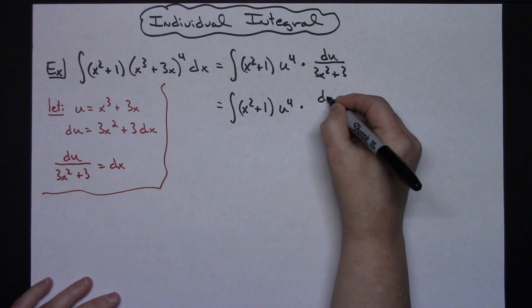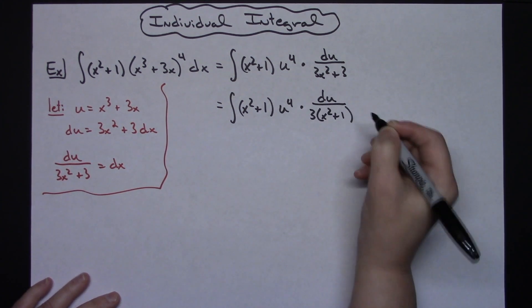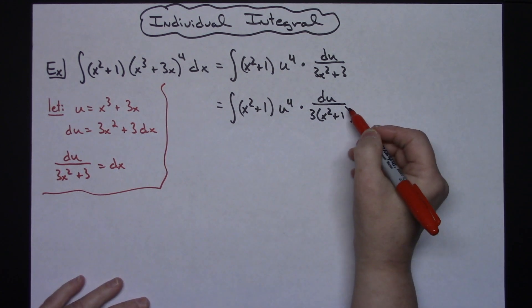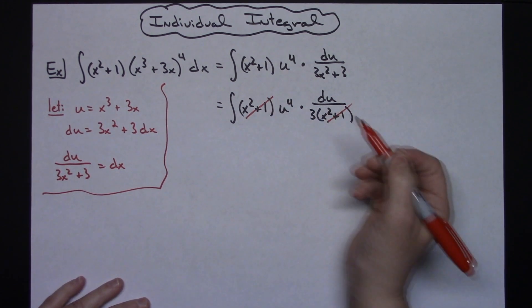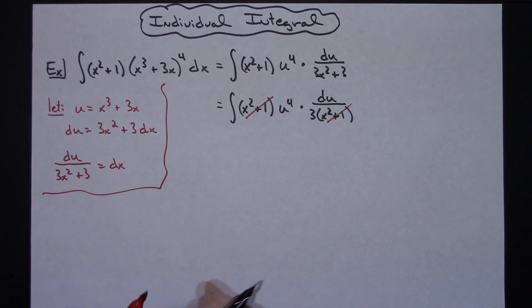then that du on top, showing the factoring of that 3 out, I'll have an x squared plus 1. That's going to allow me to take x squared plus 1 and cross it out. It's also going to allow me to pull a 1 third out in front of that integral.